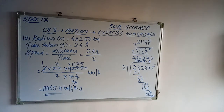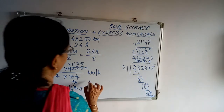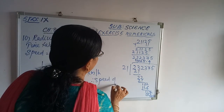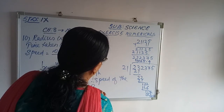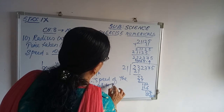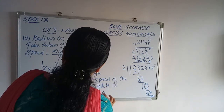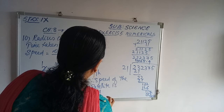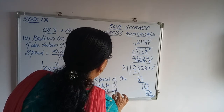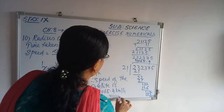Therefore, the speed of the satellite is 11,065.4 kilometers per hour.